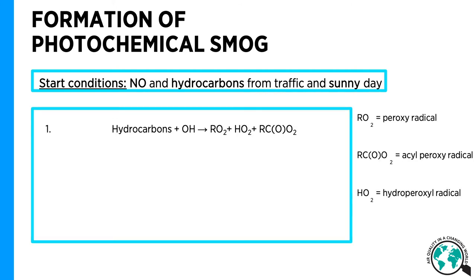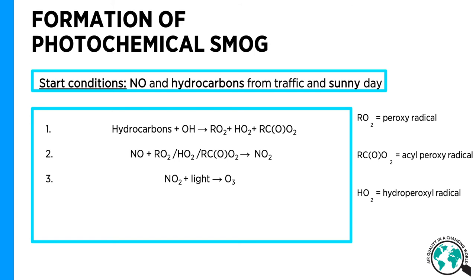In the first step, hydrocarbons from traffic are oxidized by hydroxyl radicals to form hydroperoxyl radicals and different organic radicals, including different peroxy radicals and alkyl peroxy radicals. These radicals then oxidize nitrogen monoxide and produce nitrogen dioxide. Part of the produced nitrogen dioxide photo-dissociates and forms ozone, while some is oxidized by alkyl peroxy radicals and thereby forms PAN.